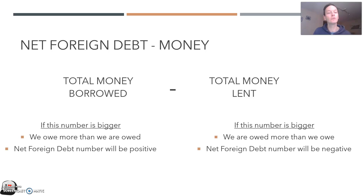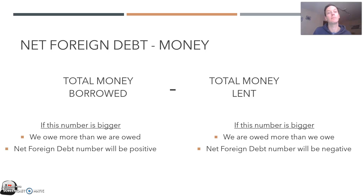If total money borrowed is bigger than total money lent, that means we owe more money than we are owed — we have borrowed more than we have lent. In that case, net foreign debt will be positive. Conversely, if the total money lent overseas — a combination of individuals, businesses, banks, and government — is bigger than what we're borrowing, then the net foreign debt number is negative.